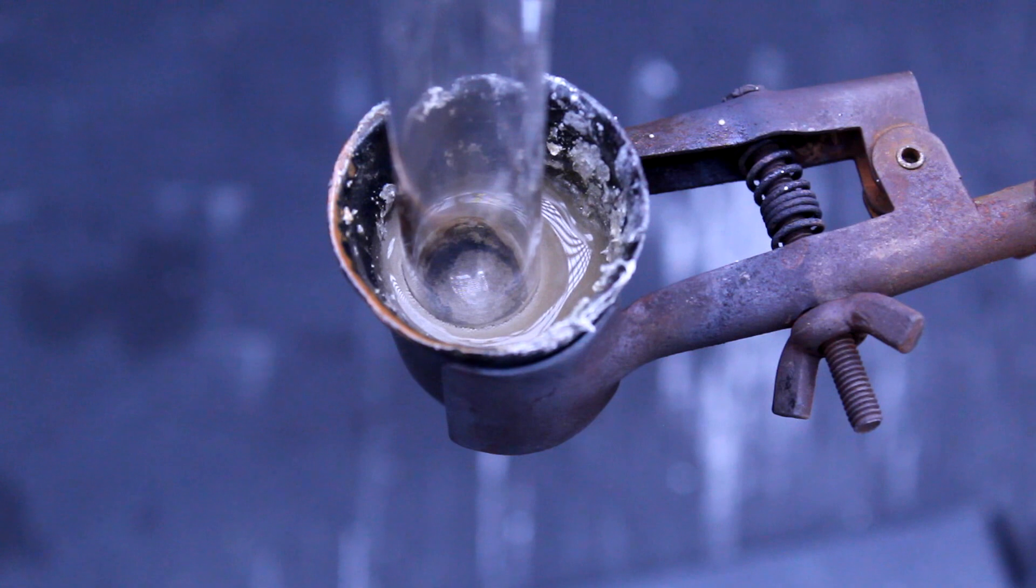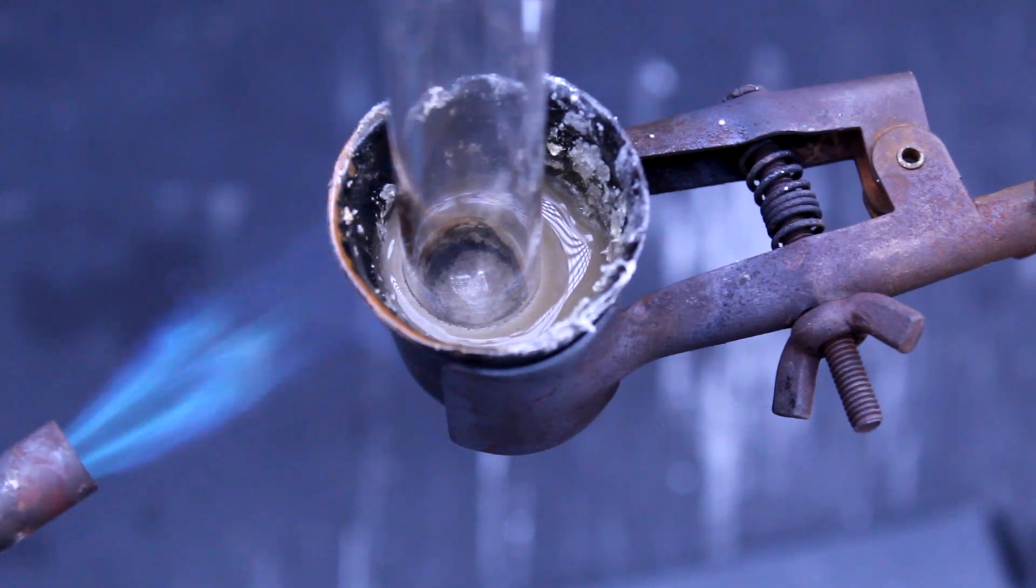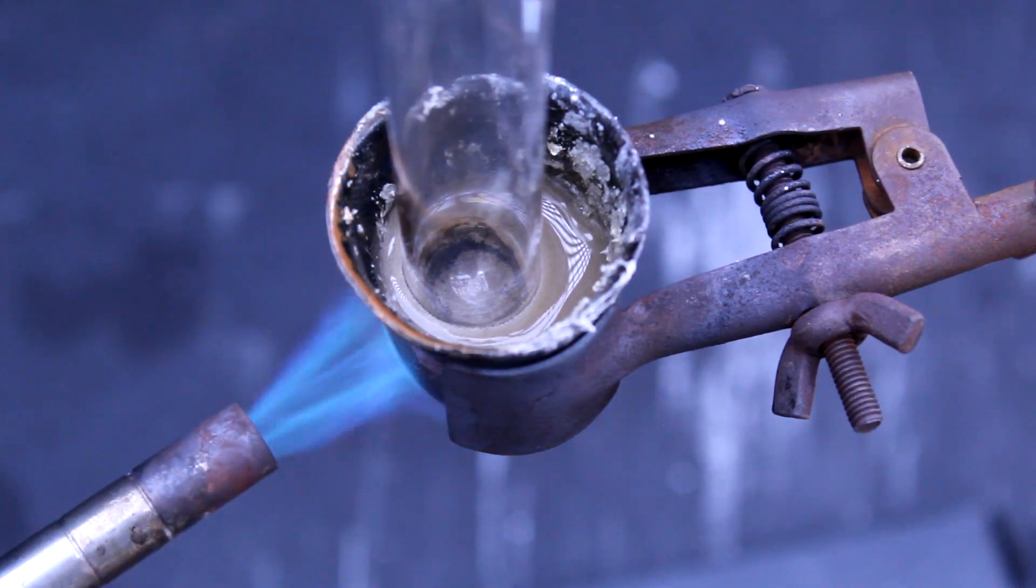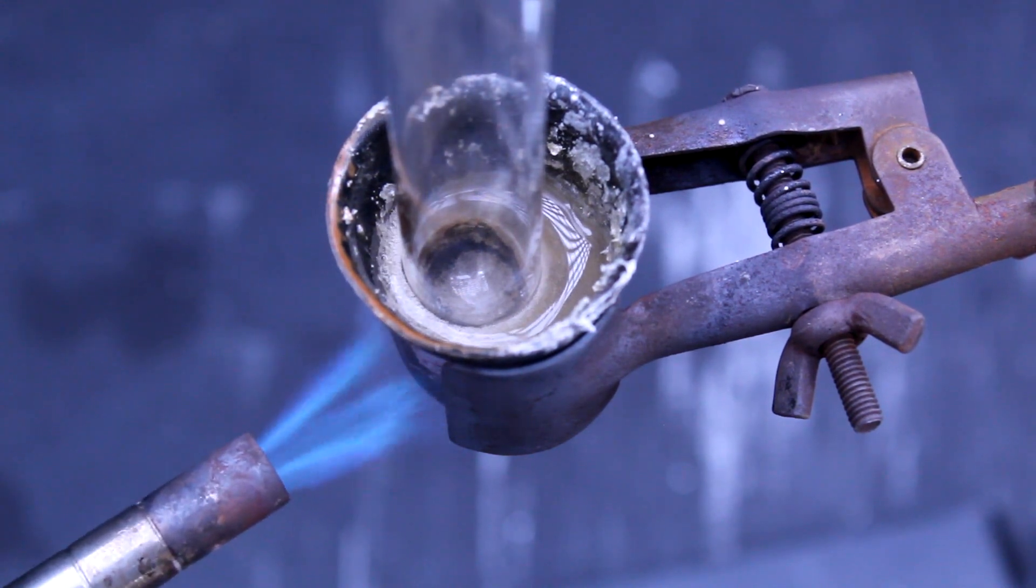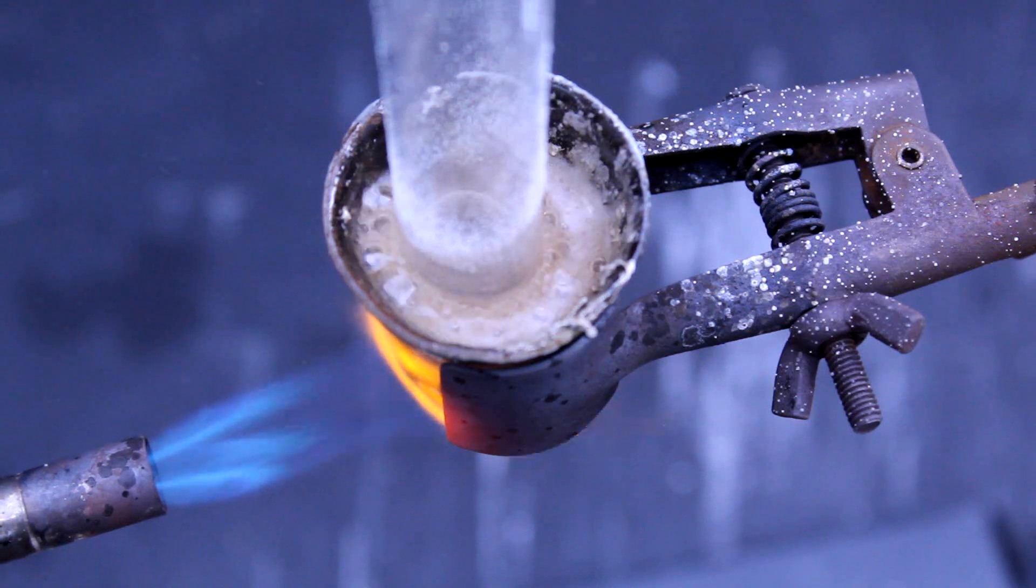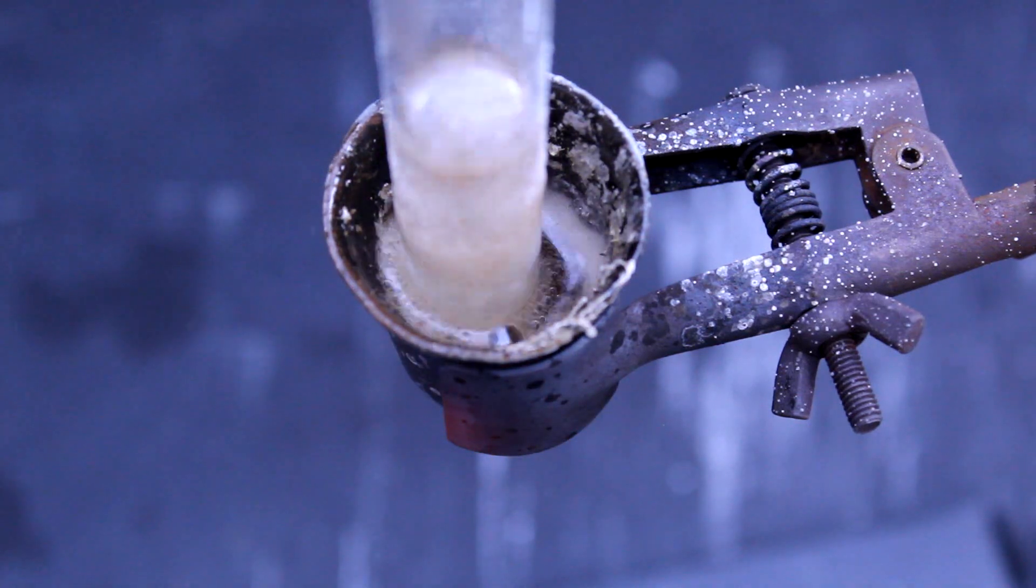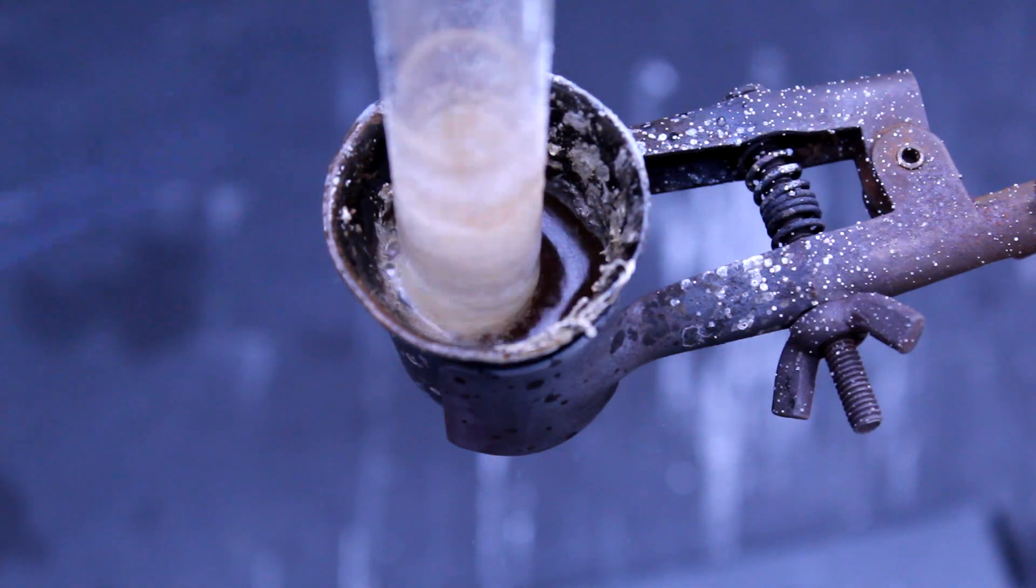Sodium silicate doesn't really have a definite formula, and its properties vary depending on how much glass is dissolved into it. If the mixture contains higher levels of glass, it will dissolve more poorly in water, have a lower pH, and will melt at a higher temperature. Since I want all my glass to melt and dissolve in water later, I'll be using more sodium hydroxide than silicon dioxide.